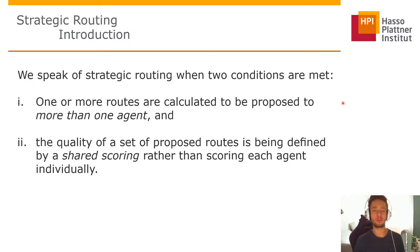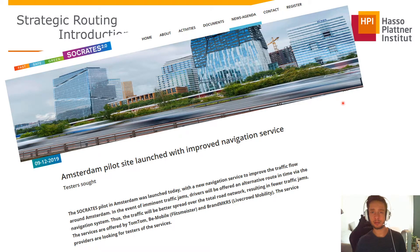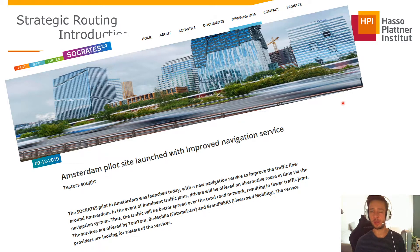We speak of Strategic Routing when two conditions are met. First, we need to calculate one or more routes proposed to more than one agent. Second, this set of proposed routes should be scored by shared scoring rather than scoring each agent individually. This is applied in practice in the Socrates 2.0 project of the European Union, where experts in Amsterdam predefine alternative routes and triggers, requiring extensive work and monitoring that algorithms can help automate.